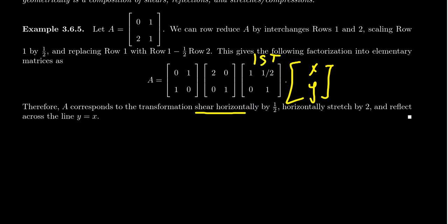The next matrix to interact with the point would then be the matrix in the middle, this matrix [2, 0; 0, 1]. This is a scaling elementary matrix. It's going to scale the first row by a factor of two. So this is going to have the geometric effect of horizontally stretching the graph by a factor of two.